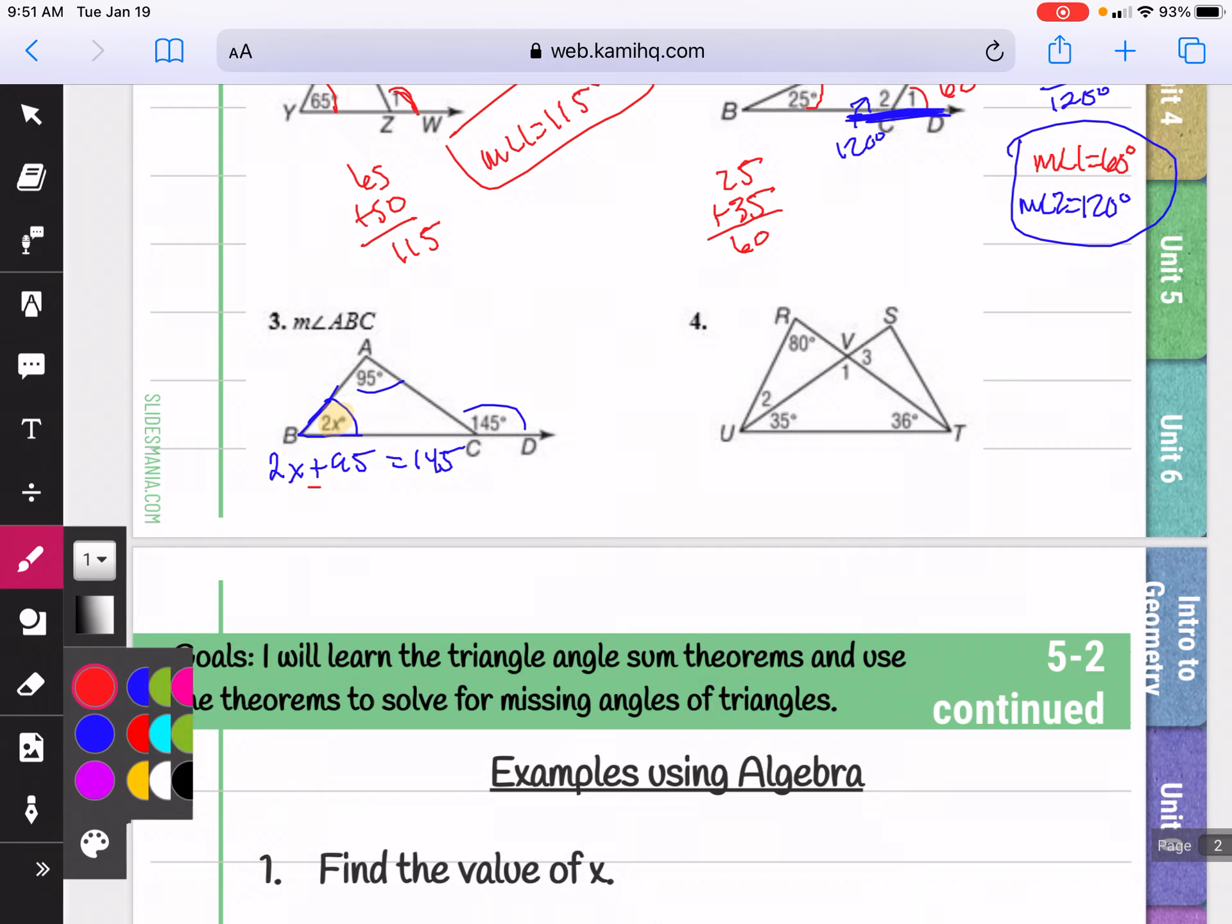So here I can subtract 95. I get 2X equals 50. And if I divide by 2, I get X equals 25. Now they didn't want X, they wanted the measure of angle ABC. So again, that's this one right here. So I'm going to plug it into 2X. 2 times 25 will be 50. So the measure of angle ABC is 50 degrees.